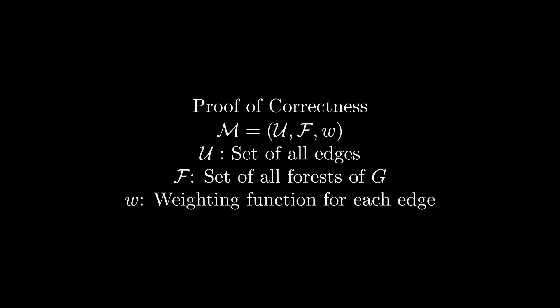Proving this algorithm is actually extremely simple, as we can simply reformulate this problem as a weighted matroid M = (U, F, W), where U is the set of all edges, F is the set of all forests in G, and W is simply the weighting function for each edge. Since Kruskal's algorithm is identical to the matroid basis weight maximization algorithm provided in the last video, we therefore have that this algorithm must be correct trivially.